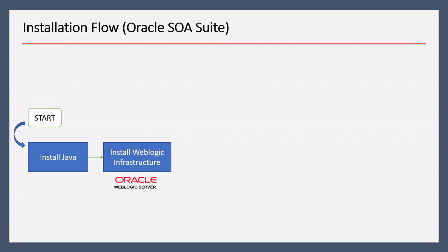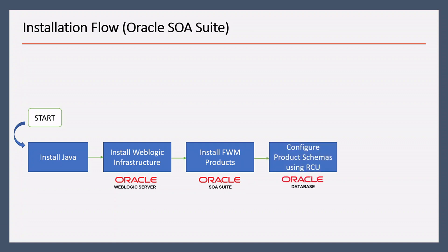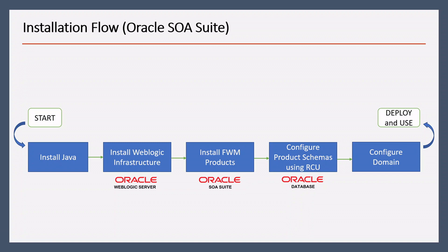To install Oracle SOA Suite, first we need Java, then we will have to install WebLogic Infrastructure, then we can install the FMW product which in this case is SOA Suite, then we can configure product schemas using RCU, and lastly we can configure the domain and deploy it. We have already seen how to install Java and Oracle WebLogic server in the previous video. In this video we will see how to install Oracle SOA Suite, configure product schemas using RCU, and then configure our domain.